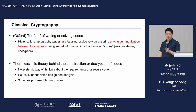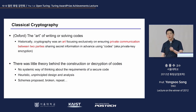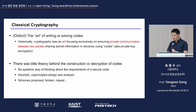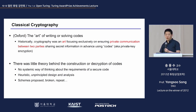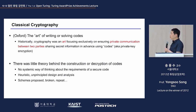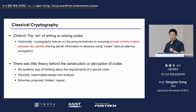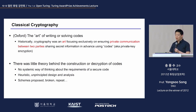If you look at the definition of classical cryptography in the dictionary, they say it is the art of writing or solving codes. I think this definition is outdated because literally it says an art and not a science. That is because in the beginning, cryptography was about ensuring private communication between two parties sharing secret information, and the way it developed was seen as a kind of art.